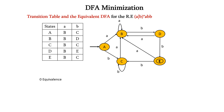First, we have to find the zero equivalence. Zero equivalence means we have to segregate the final states and non-final states into separate sets. So, here the non-final states are A, B, C, D and the final state is E. So, we can write them separately.